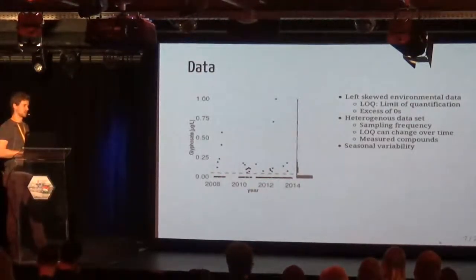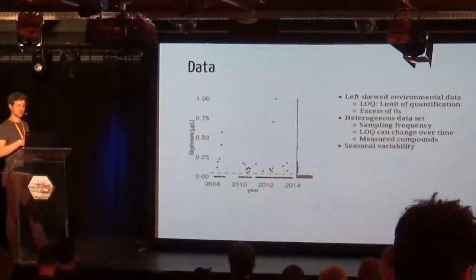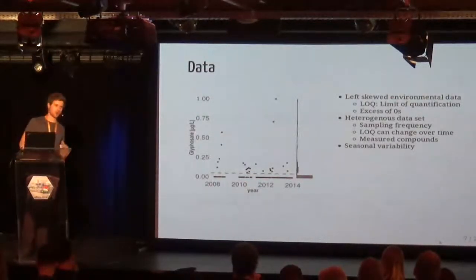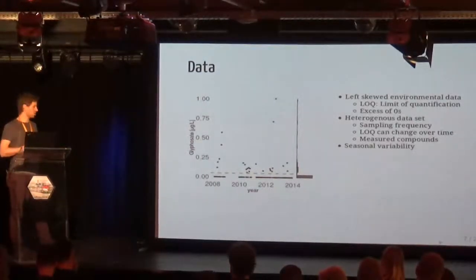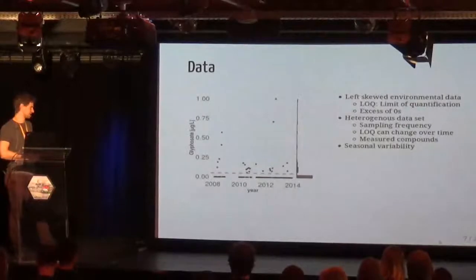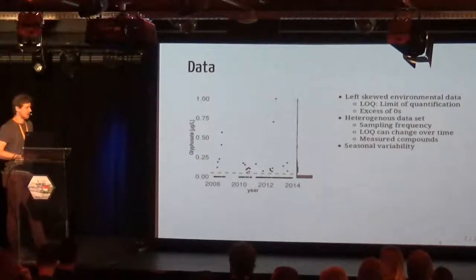The zeros are due to the limit of quantification. Whenever you take a chemical sample and do chemical analysis, the machine has a limit of quantification. For glyphosate in this case it's around 0.01, and all concentrations below that can be detected but the machine is not able to quantify them. So we have a lot of zeros, and actually most of our data consists of these detected-but-not-quantified substances.